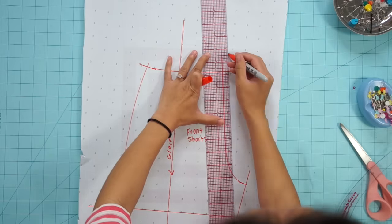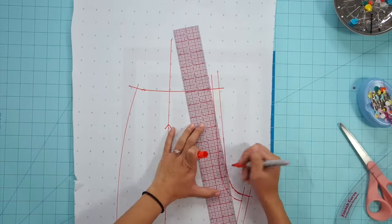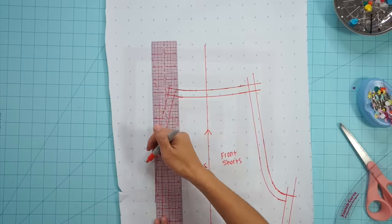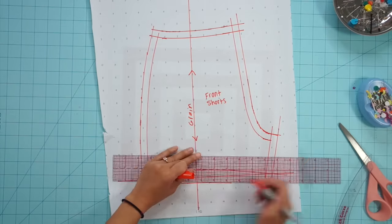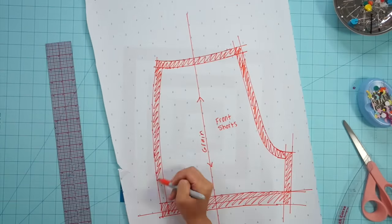Once the front shorts is marked out I can go ahead and add my seam allowance all around the edges. I normally use a half inch seam allowance on all my projects and at the hem I'll make it a little longer.